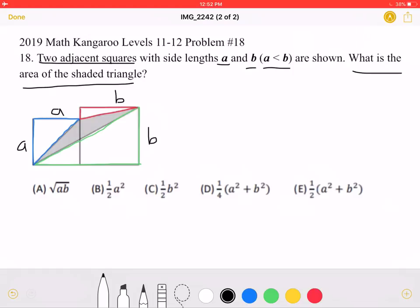So, we know that the total area of this figure would be A squared plus B squared. That's the area of the two squares.